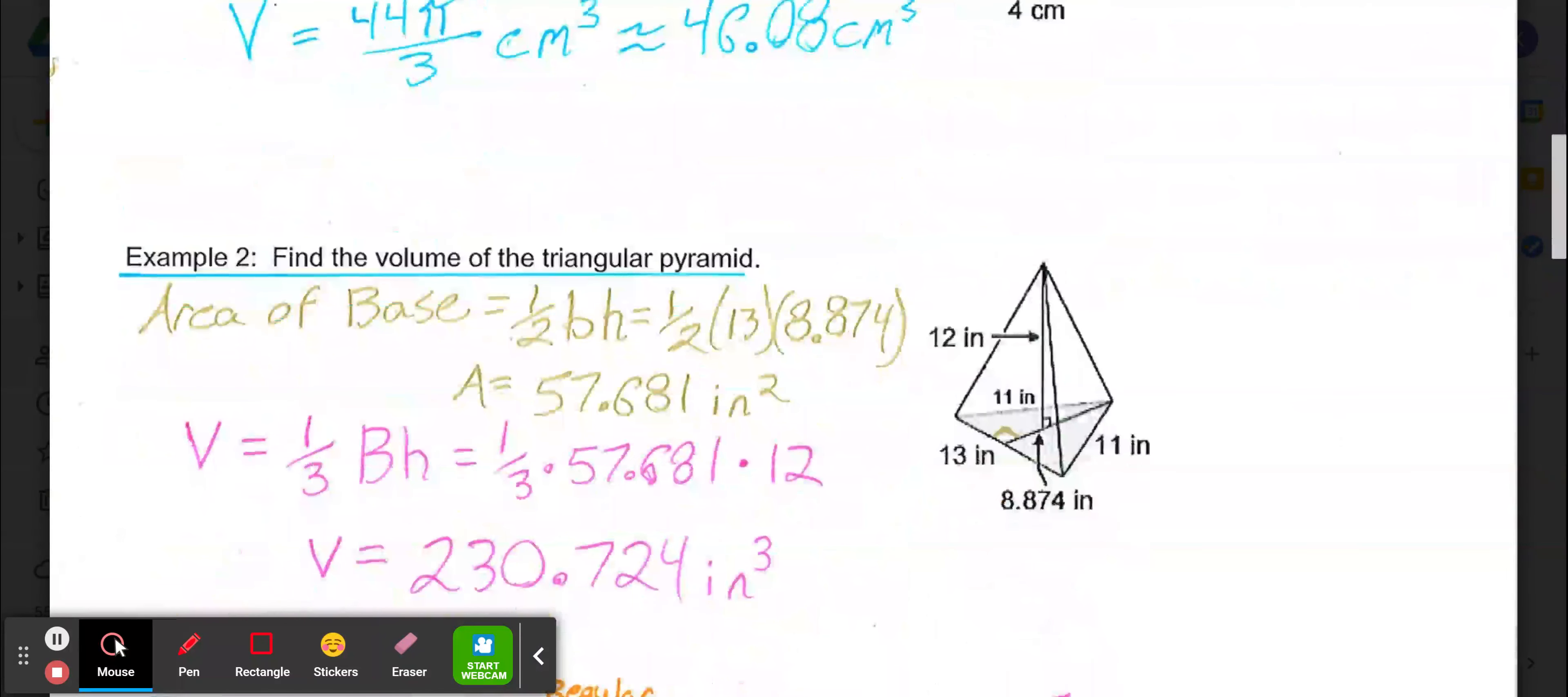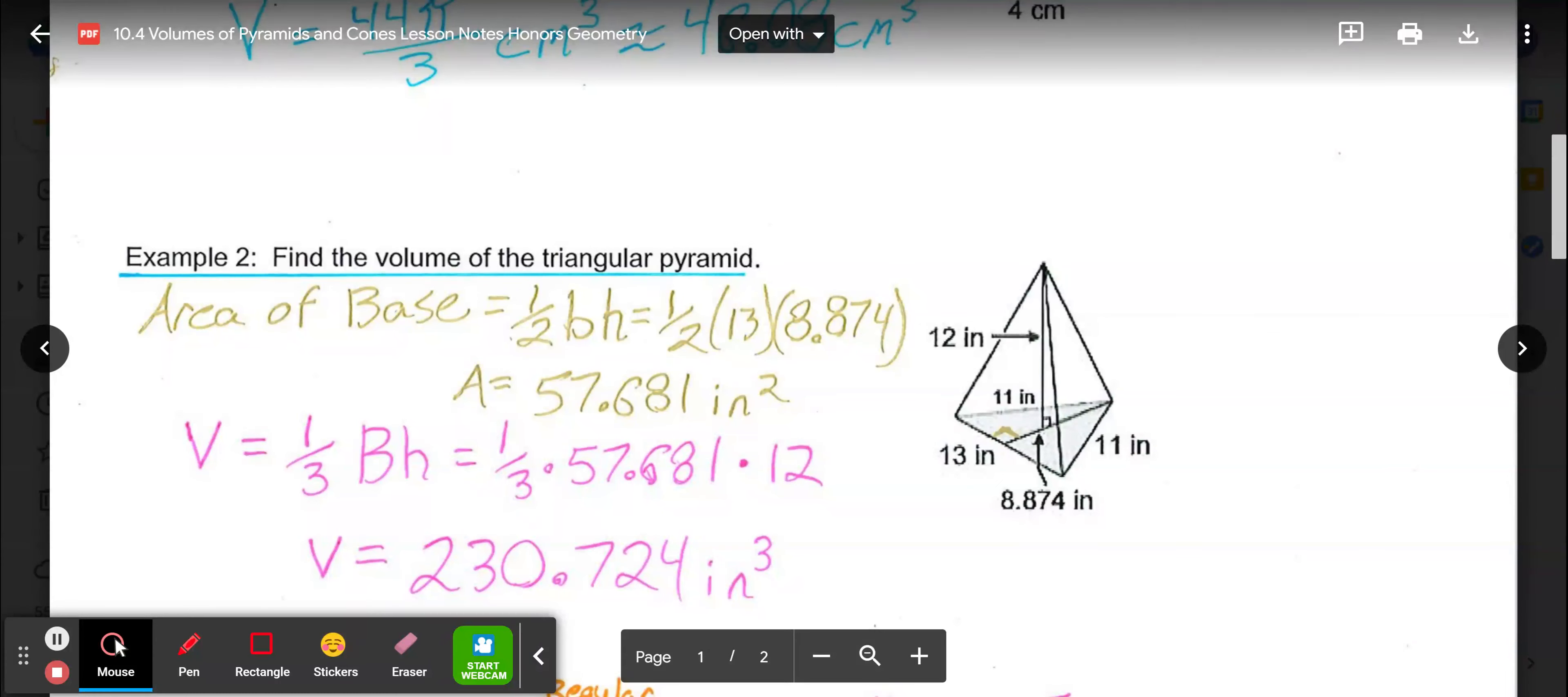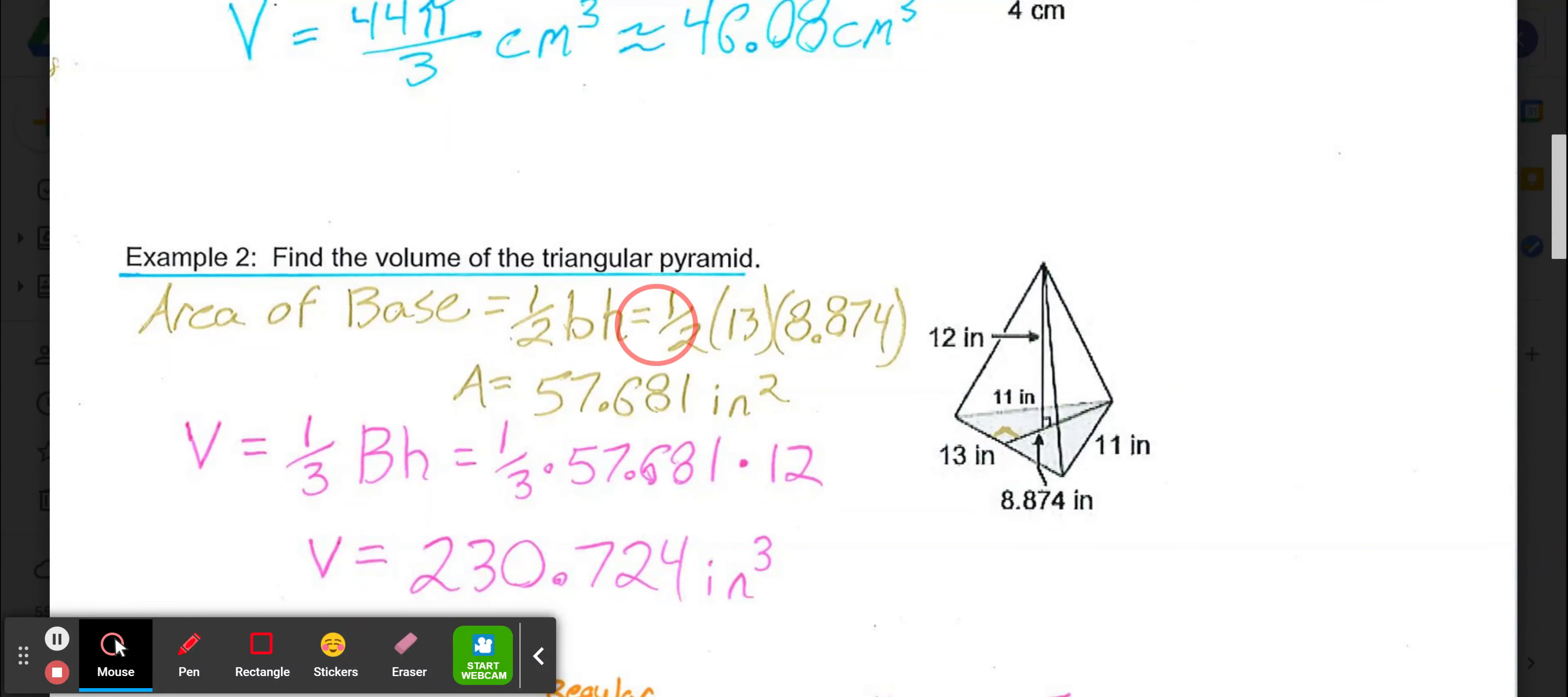Moving on to example 2, we are looking at a triangular pyramid. We know the base of this triangular pyramid is down here, so we're finding the area of this bottom triangle. The area of that base would be one-half base times height because it's a triangle. Base of that triangle is 13 inches, height of that triangle meeting the base at 90 degrees is 8.874. So 13 times 8.874 multiplied by one-half gives us 57.681 square inches.